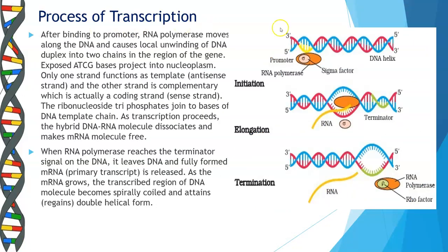Now let's see the process of transcription. After the RNA polymerase binds to the promoter region, it moves along the DNA and causes the unwinding of the DNA duplex into two chains in the region of that gene. Only one strand acts as the template strand and the other strand is the coding strand. The ribonucleotide triphosphates join to the bases of the DNA template strand. As transcription proceeds, a hybrid DNA-RNA molecule dissociates and the mRNA molecule is set free. This is the initiation step.